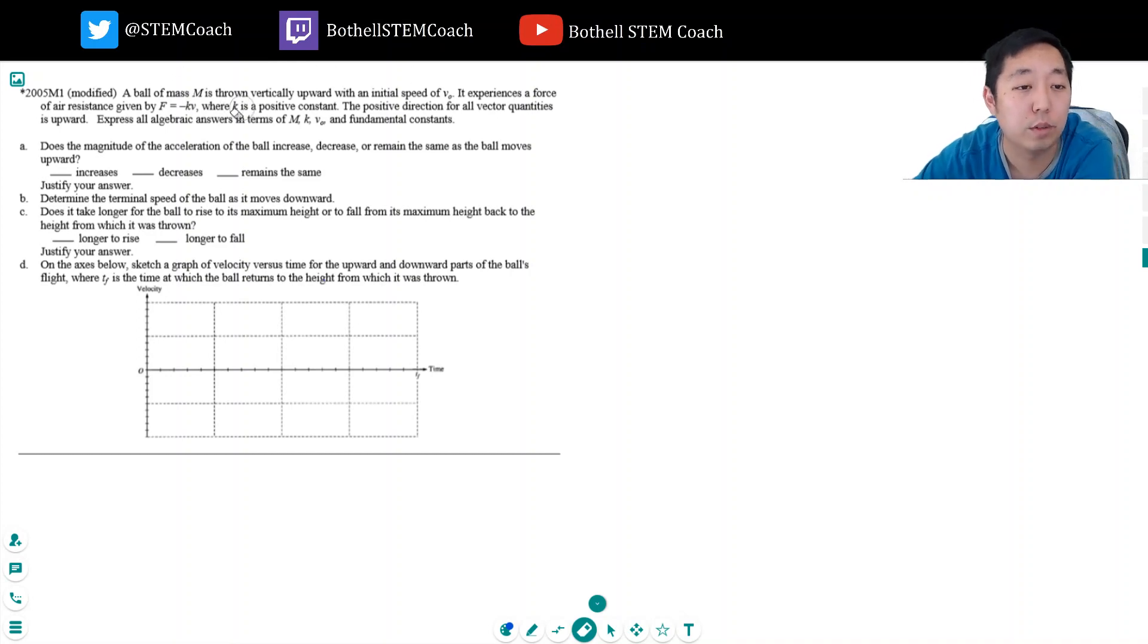A ball of mass m is thrown vertically upward with an initial speed v0. Now experience a force of air resistance given by f equals kv, negative kv, where k is a positive constant. The positive direction for all vector quantities is upward. Express all algebraic answers in terms of that.